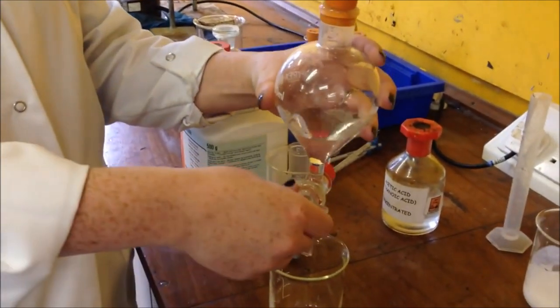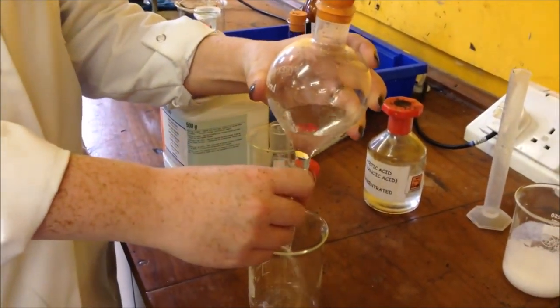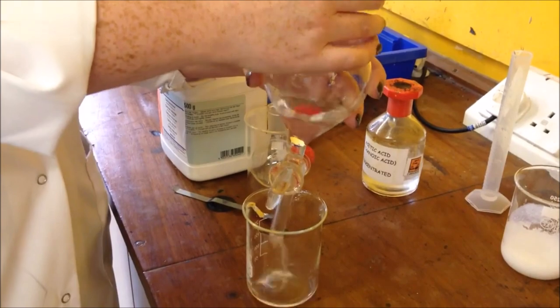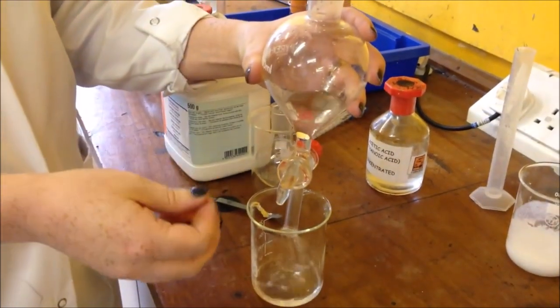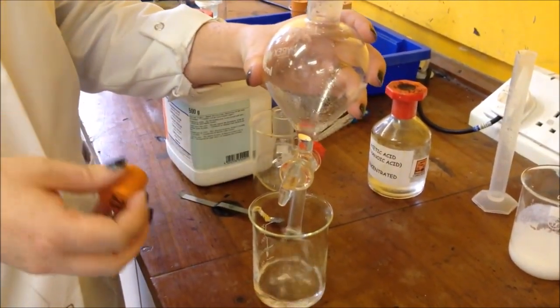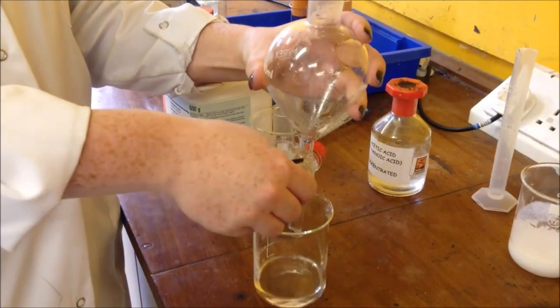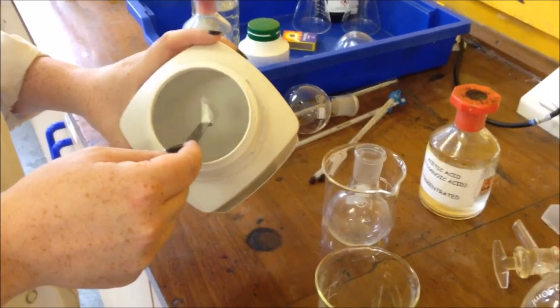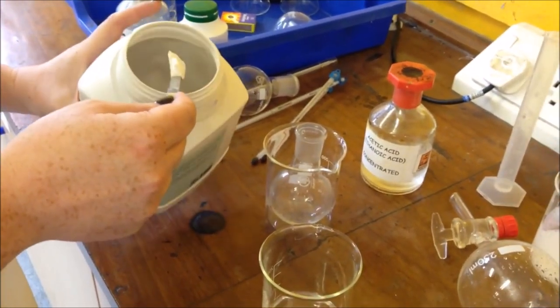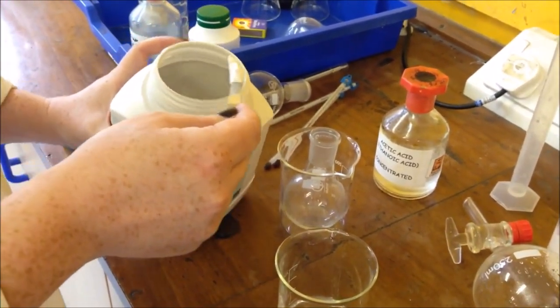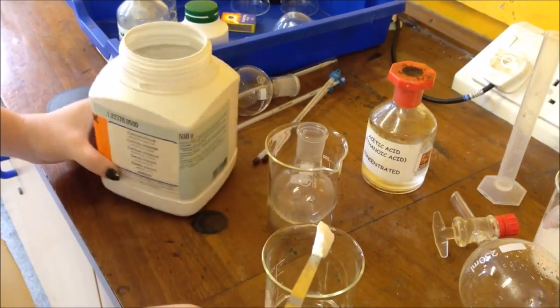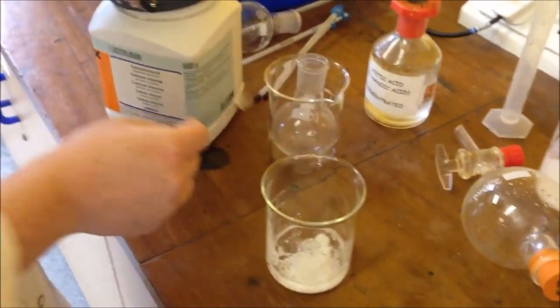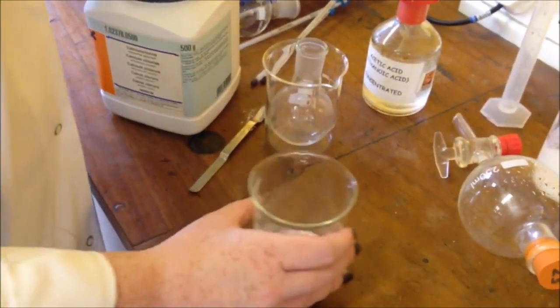So now that I've just got my top layer, I'm just going to add some solid anhydrous calcium chloride. Doesn't say how much so I'm going to add that much. Give it a bit of a swirl.